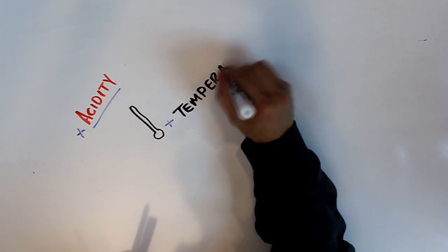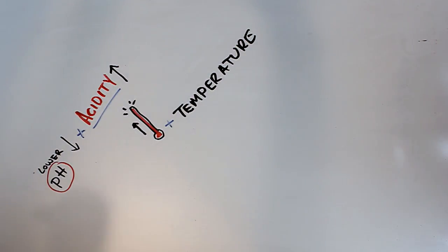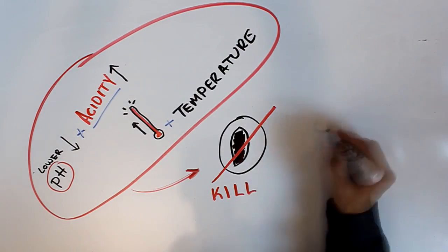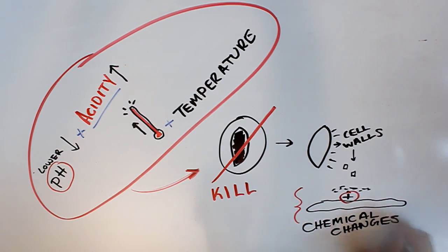The acidity and high temperature kills the cocoa bean. This causes the cell walls to break down and mix with the earlier substances, allowing a bunch of chemical changes to take place in the beans. These complex chemical changes are what give the cocoa its flavor and color.